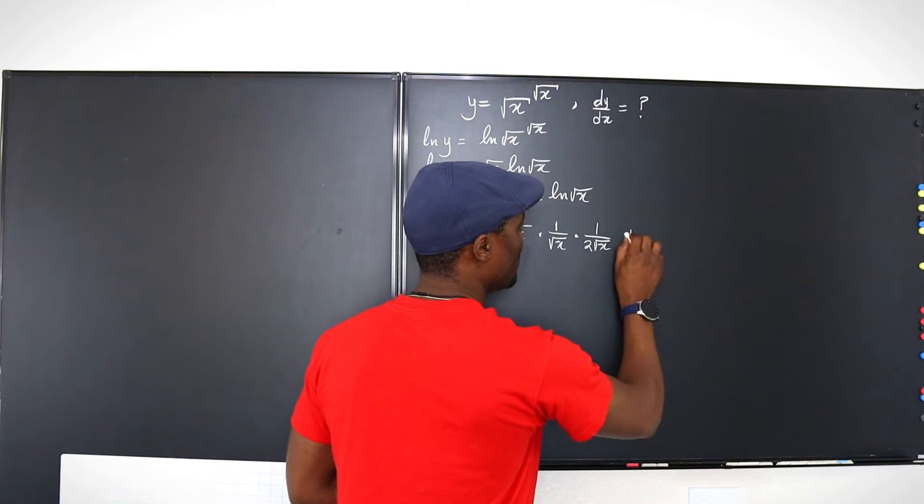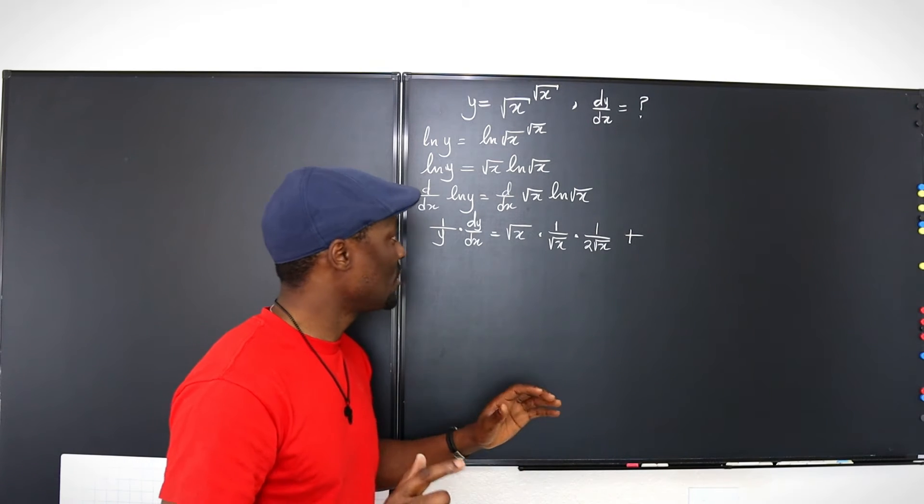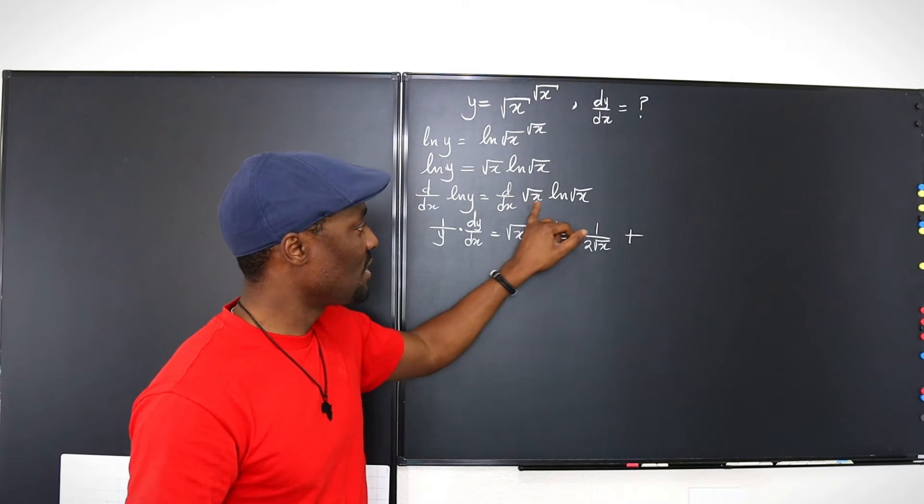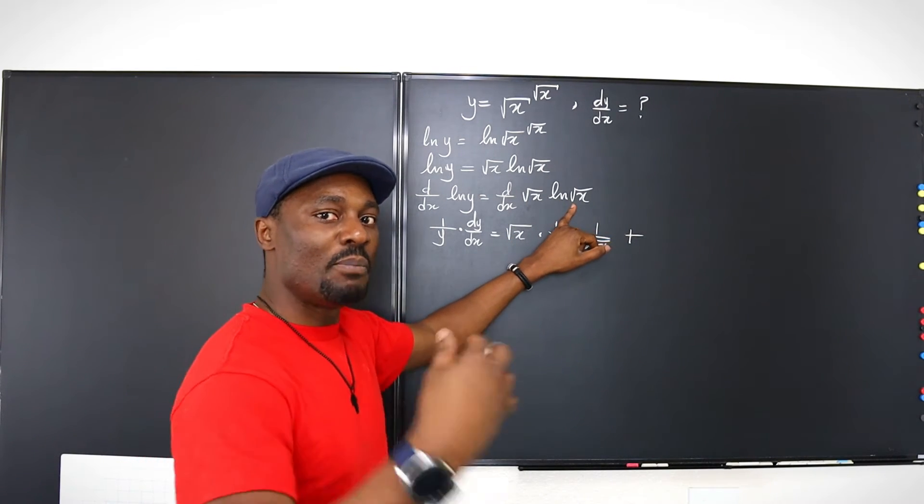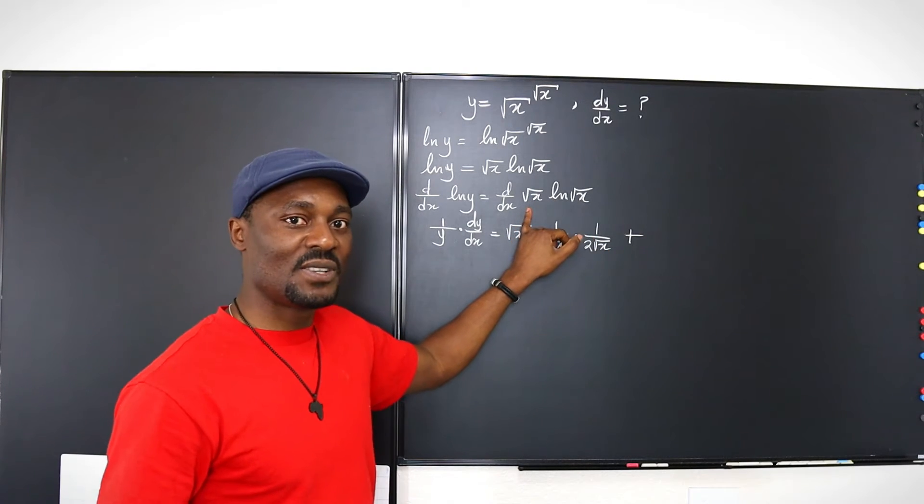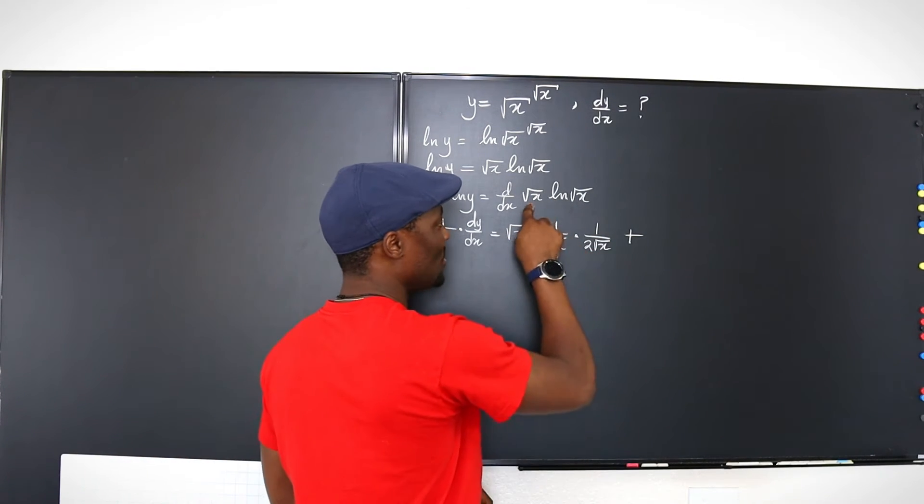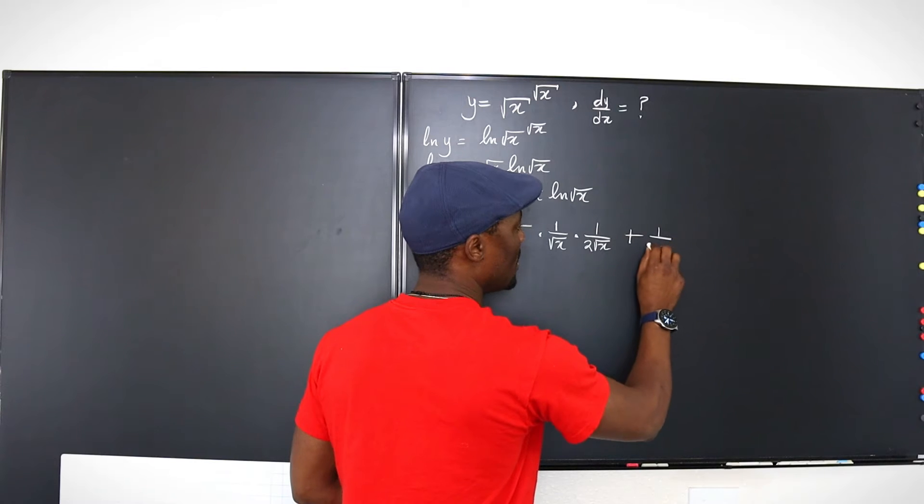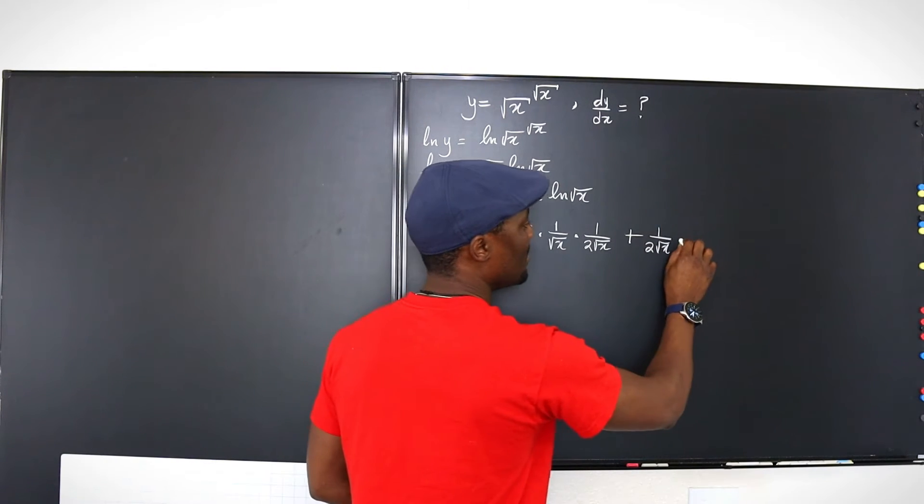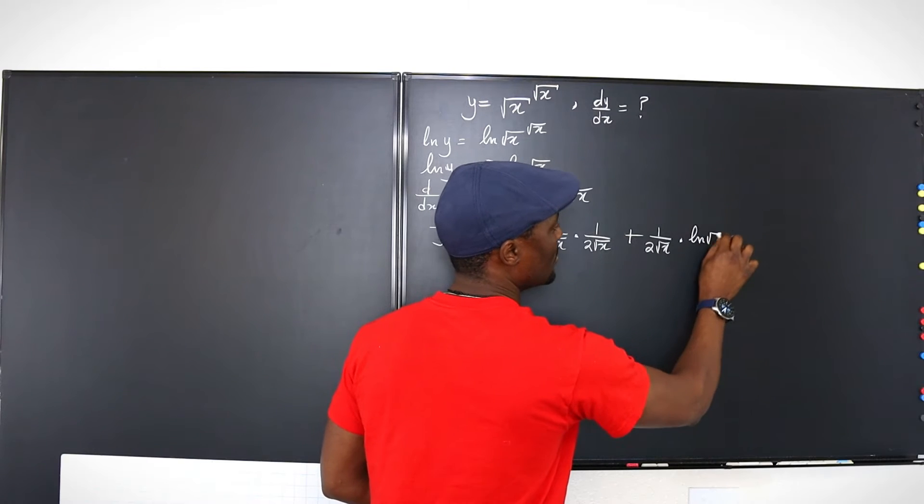Now let's go to the second one. Plus, so the second part, remember the first part was, keep the first, differentiate the second. Plus, differentiate the first, keep the second. Differentiate the first, it's going to be 1 over 2 square root of x, and then you keep the second, ln square root of x.